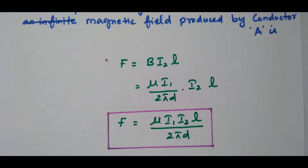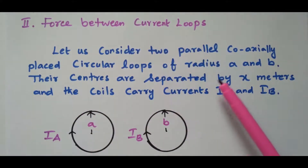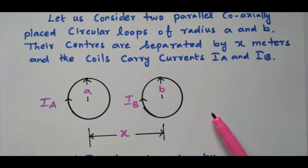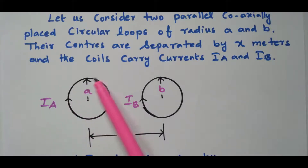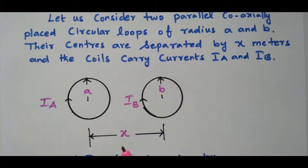Now we will go to the force between the current loops — two different conductors with two different current loops. In the previous derivation, two conductors shared only one current loop, but in this derivation two current loops are formed for two different conductors. This is conductor A with current IA, and we consider one circular loop with radius a meters. This is conductor B with current IB, and we construct another circular current loop with radius b. The center-to-center distance between the loops is x meters.